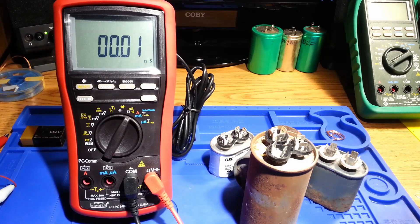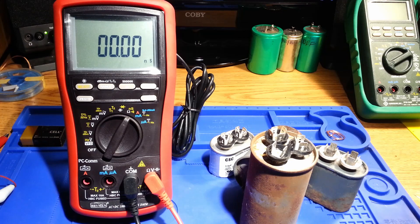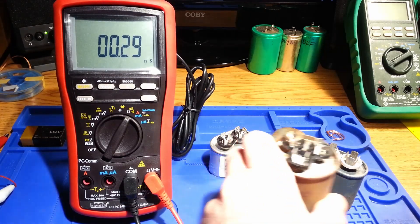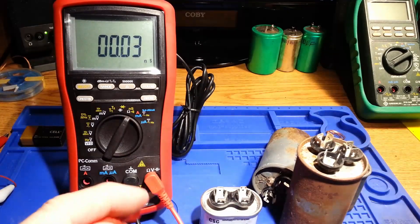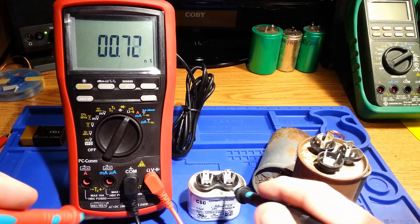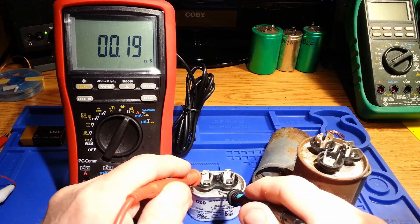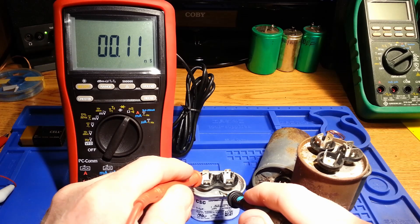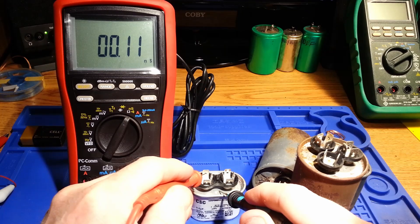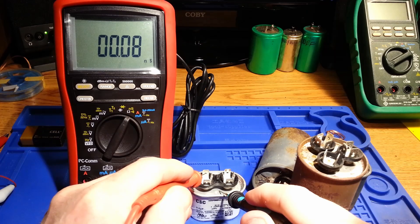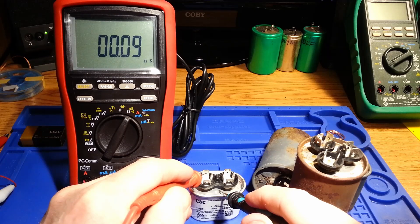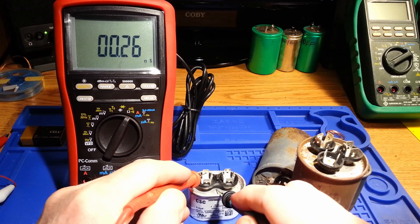Now a 0.01 on this is 0.01 nano siemens, and conductance is the inverse of resistance mathematically. And an indication of 0.01 would be a hundred gigaohm resistance. And in this case, I am going to go between the case of the capacitor, the new capacitor, and one of the leads.